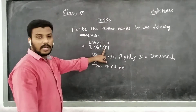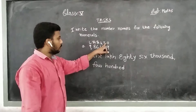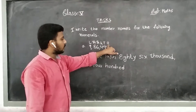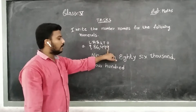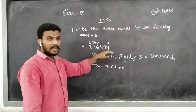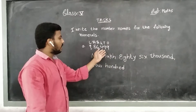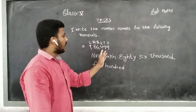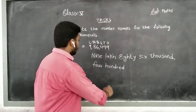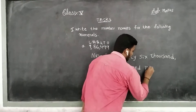And then in the place of tens, we have the value 9. 9 into 10 — how much? 90. Then in the place of ones, we have the value 9. 9 into 1 — how much? 9. So 90 plus 9 — how much? 99.